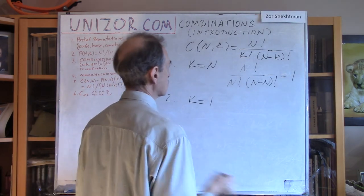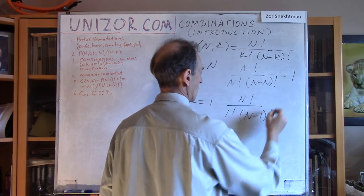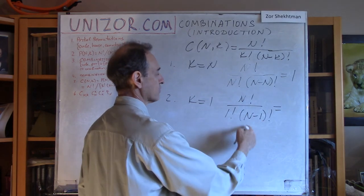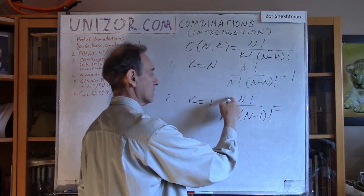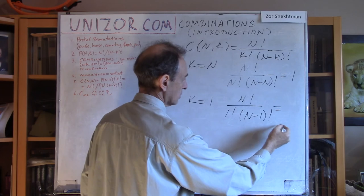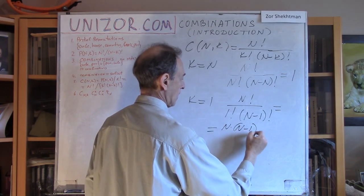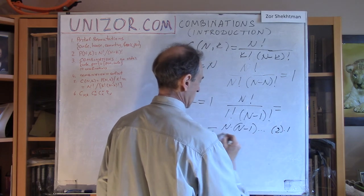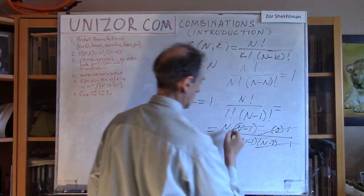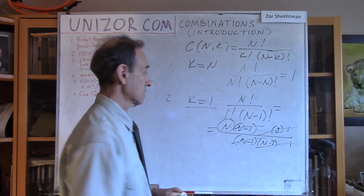Let's check the formula: n factorial divided by 1 factorial and n minus 1 factorial. 1 factorial is 1. n minus 1 factorial is the product of all numbers from 1 to n minus 1. n factorial is the product of all numbers from 1 to n. So the product from 1 to n minus 1 cancels out, and only n remains. So for k equals one, our intuition says it should be n, and the formula gives exactly that.